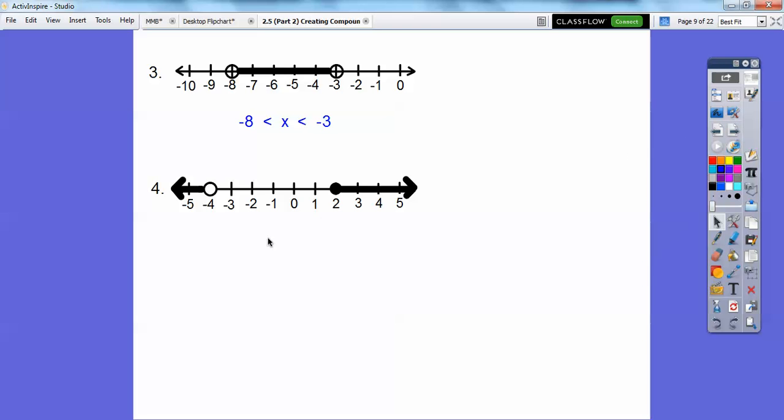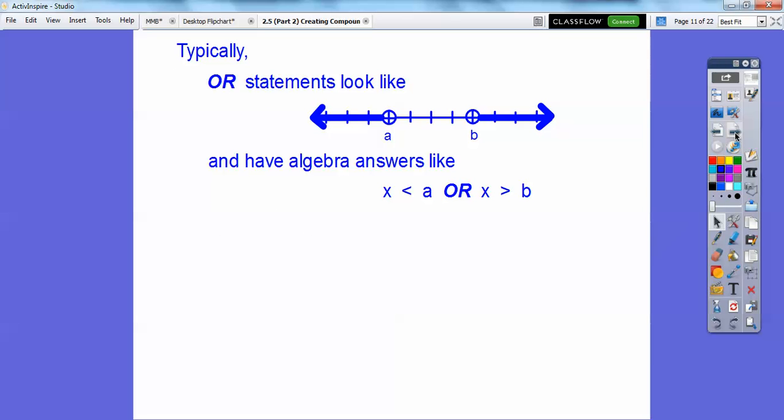This is a fast lesson, you guys. Here's another OR statement. So this one's going to be X is, remember we go this way, less than to the left, so X is less than negative 4, then you say the word OR, or X is, this is going to be greater than or equal to 2. All right, I told you this was easy.